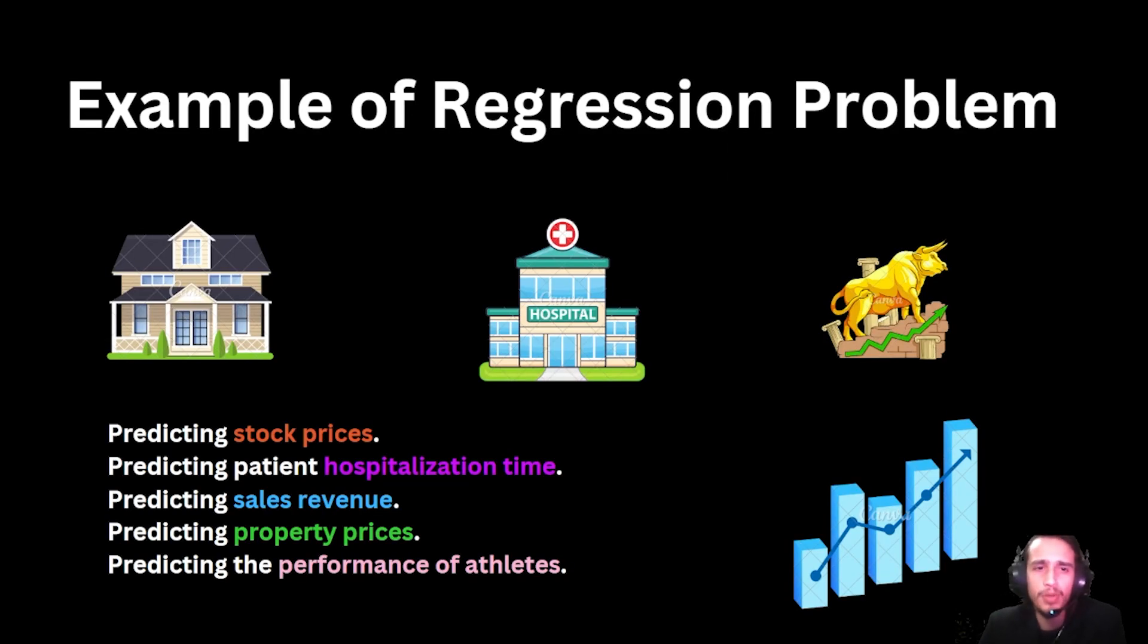What is a regression problem? We'll take examples like predicting stock prices, predicting patient hospitalization time, predicting sales revenue, property prices, performance of athletes, and many more. You can see a similarity in these - these all are continuous data, like 1.5, 1.7, 1.8, continuously going up and down.